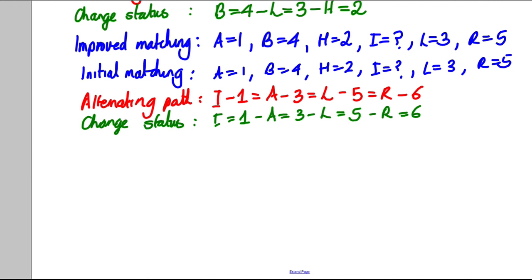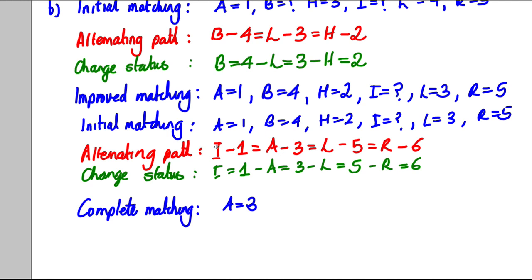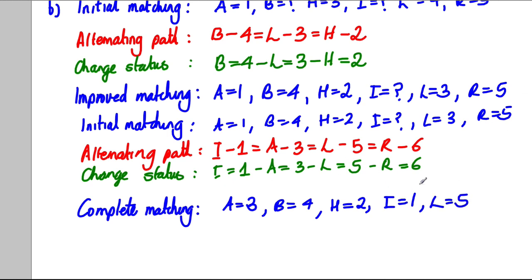Now we have a complete matching. The complete matching is: A with 3, B with 4 (unchanged from improved matching), H with 2 (unchanged), I with 1, L with 5, and R with 6. That's our complete matching and we're done.